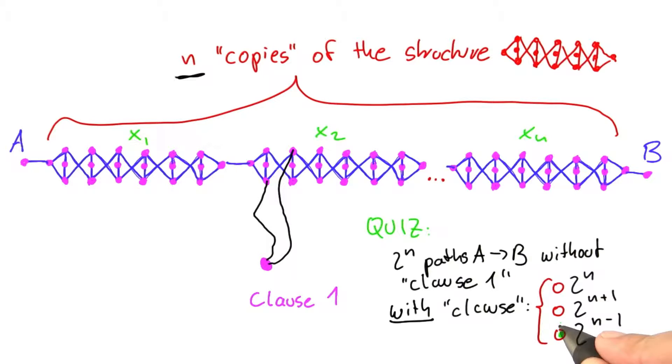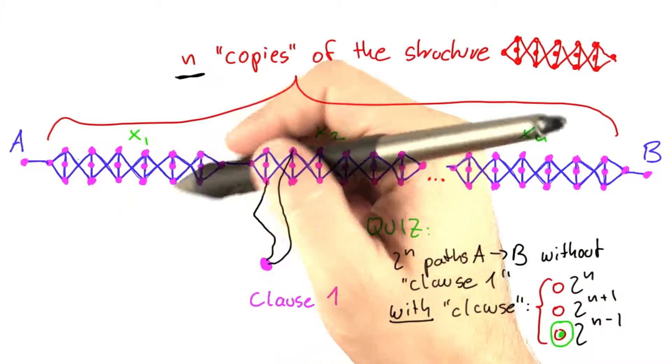And now comes the interesting part because the answer is 2 to the power of n minus 1. The important thing to notice here is the following.